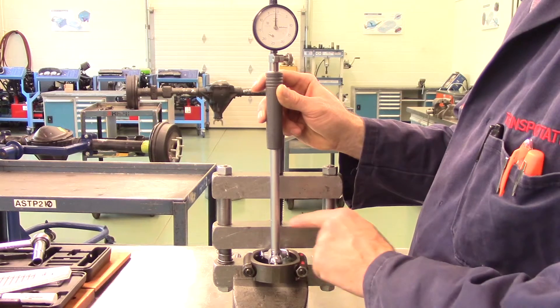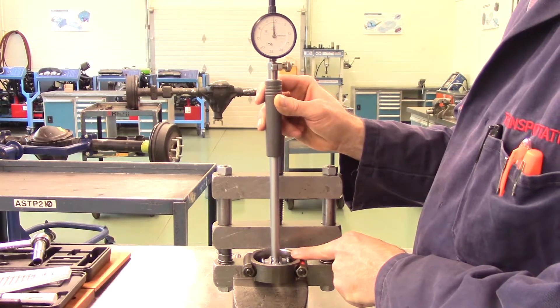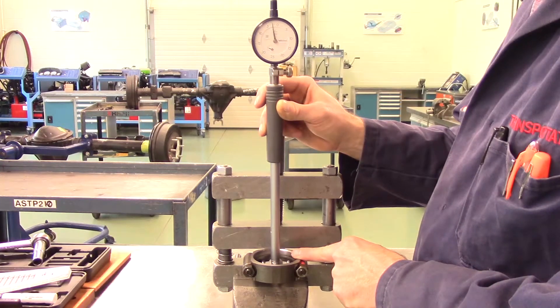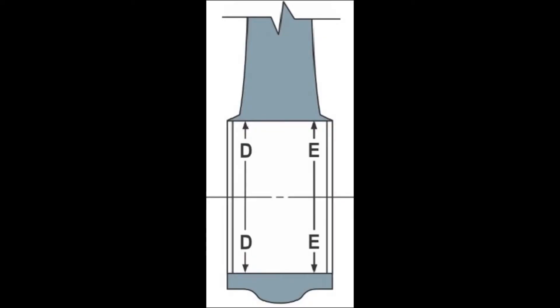For taper, you must use the dial bore gauge to measure a point at the front of the bore and compare it to a point at the back of the bore, as indicated in the diagram. The difference between the largest and smallest measurement will be your taper.